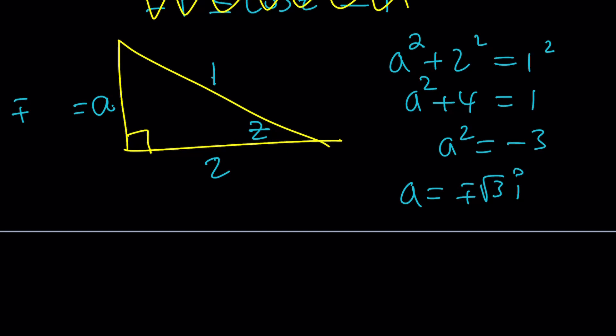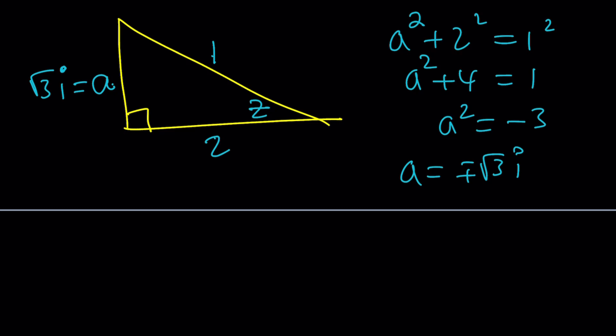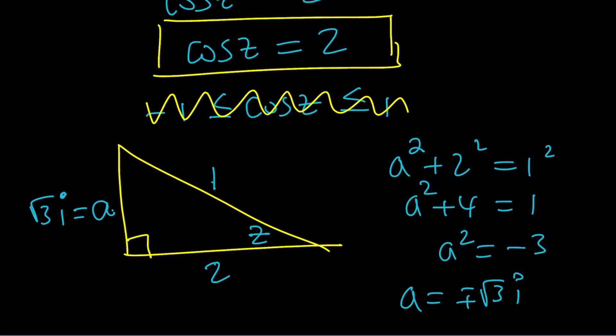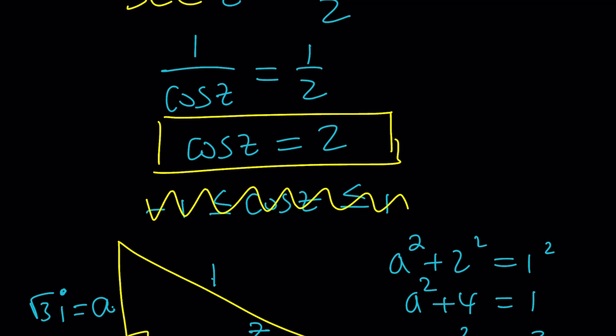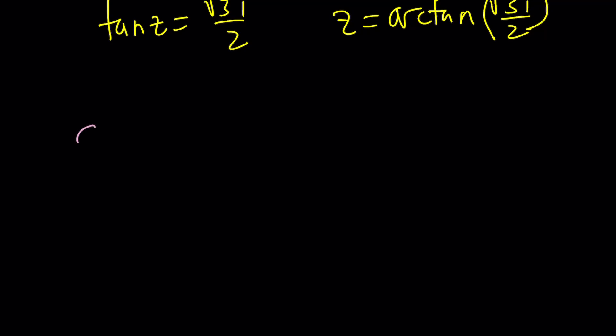So from here, we got plus minus the square root of three i. Whichever one you like better, pick that. I guess I could probably pick the positive or the principal. Complex numbers don't have signs like positive or negative, but at least it is a positive multiple of i. So what does this give me? I mean, can I find z from here? Well, you could kind of go real easy and say tangent z is equal to square root of three i over two. So maybe z is equal to the arc tangent of square root of three i over two. Would that work? I guess if you plug it into a calculator, you'll get an answer, but we need more than that.